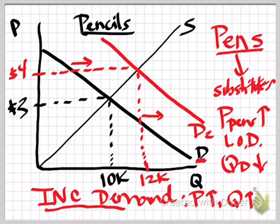Now, on the other hand, if we had, let's say, a decrease in consumer income causing demand for pencils to this time decrease,